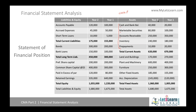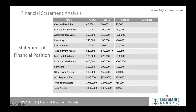We have two years' amounts: last year and current year totals for current assets, followed by non-current assets with accumulated depreciation. Total current assets plus total fixed assets give total assets. On the other side, we have current liabilities, long-term liabilities, and shareholders' equity. Total liabilities and equity equals total assets.